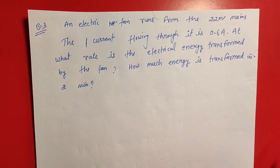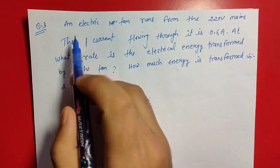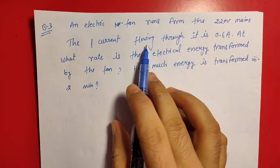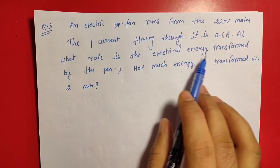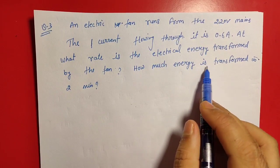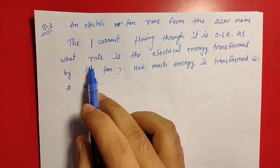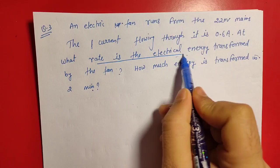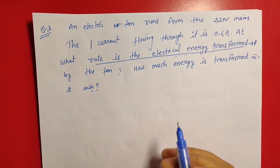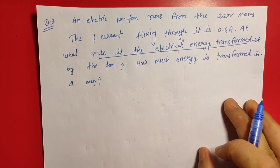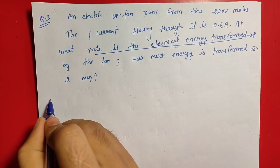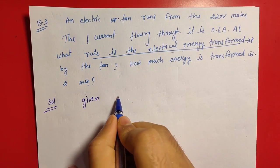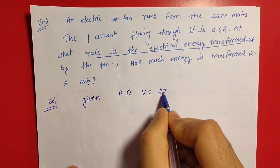No third question. Question number third is based on electric power. Our question is: an electric fan runs from the 220 volt mains. The current flowing through it is 0.6 ampere. At what rate is the electrical energy transformed by the fan? How much energy is transformed in two minutes?